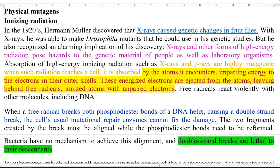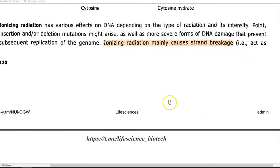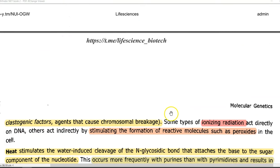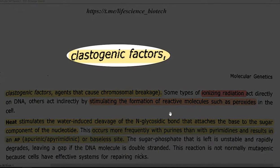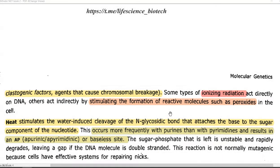Free radicals are ionized atoms with unpaired electrons. These free radicals can react violently with molecules including DNA in the cell. The free radicals break both phosphodiester bonds of the DNA helix, causing a double strand break. The cell's usual repair enzymes cannot fix this kind of damage. Thus, ionizing radiation mainly causes strand breaks — these are technically referred to as clastogenic factors, meaning they can cause chromosomal breakage in the cell. They can also form reactive molecules such as peroxides that can damage the DNA molecule.